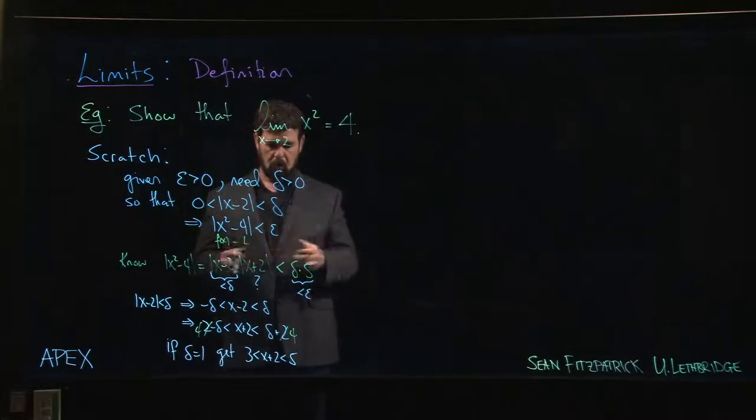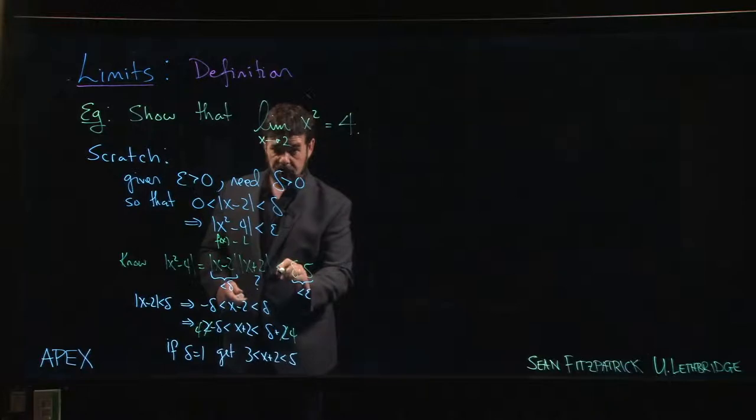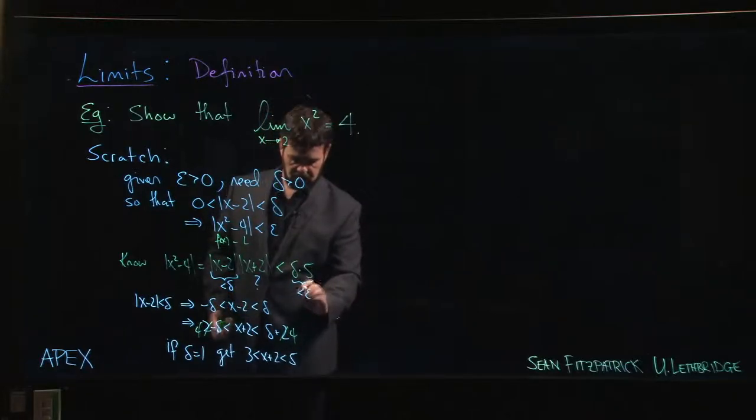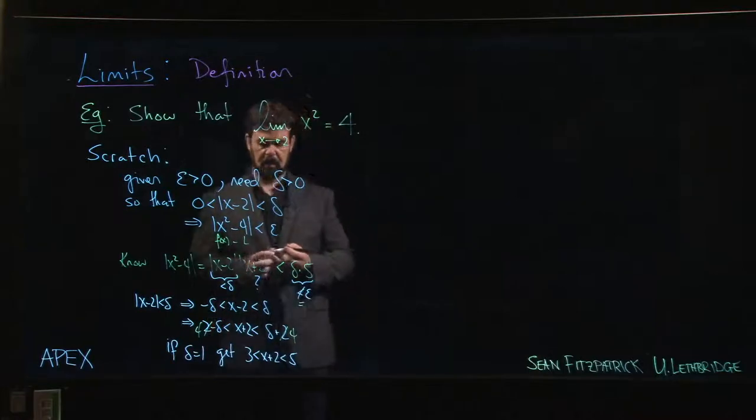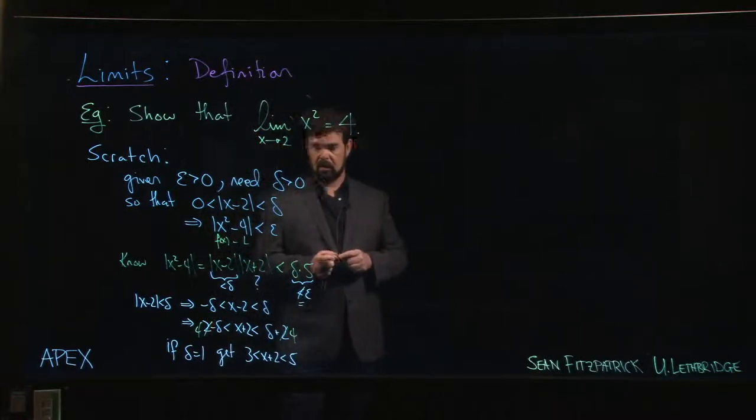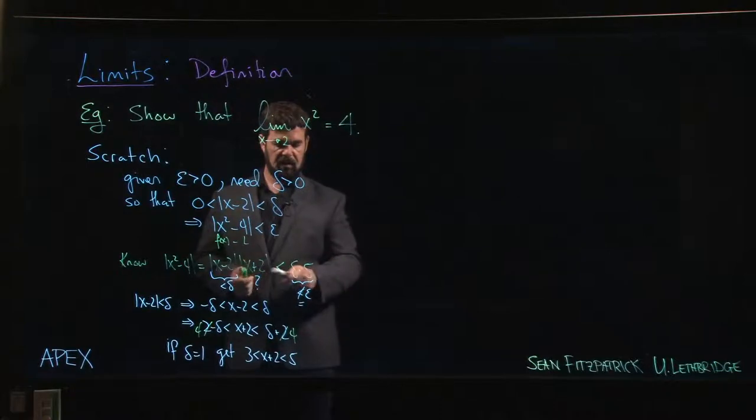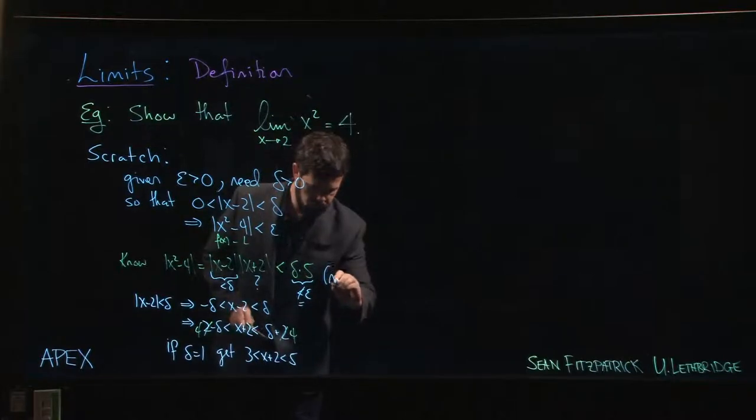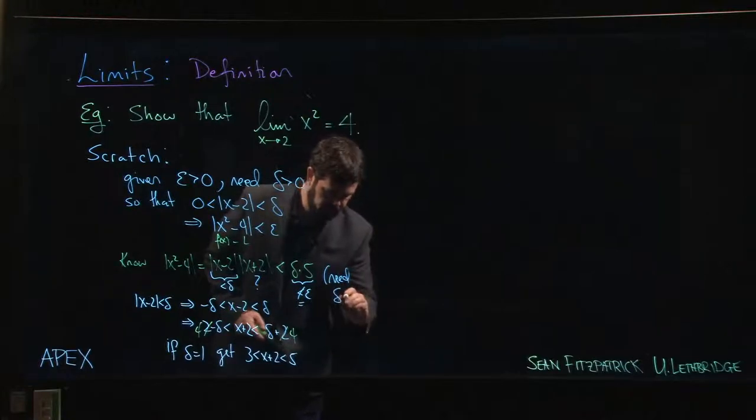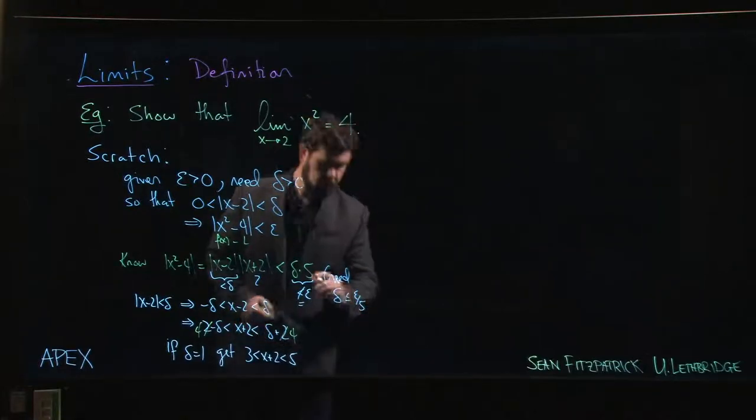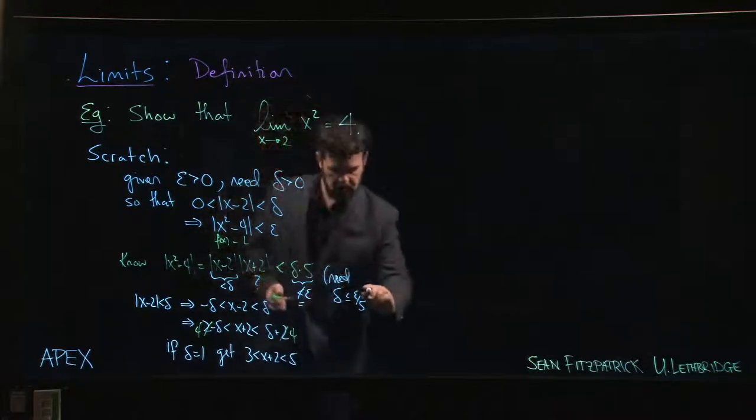And we say, but we want that to be less than epsilon. Or we can even go with less than or equal because we already have the strict inequality here. So in fact, we could take this to be not just less than but actually equal to epsilon. And that tells us what delta has to be. So if 5 delta is equal to epsilon, then this says that I need delta to be less than or equal to epsilon over 5.